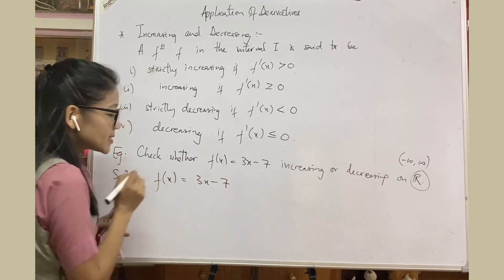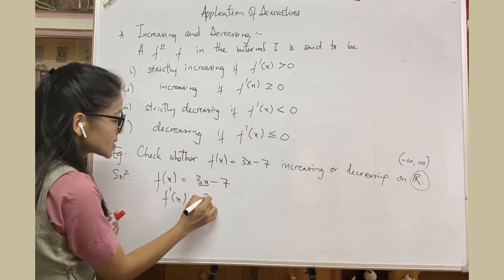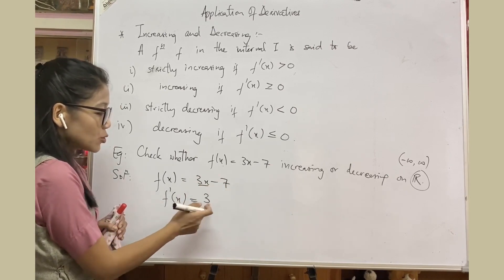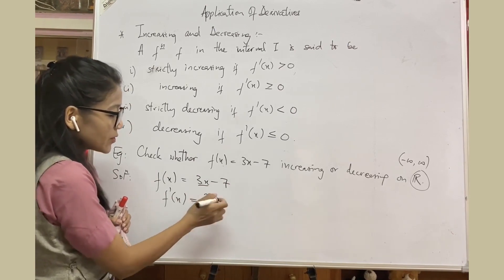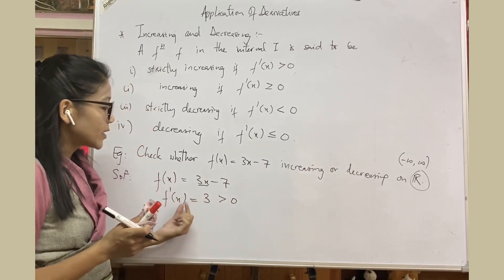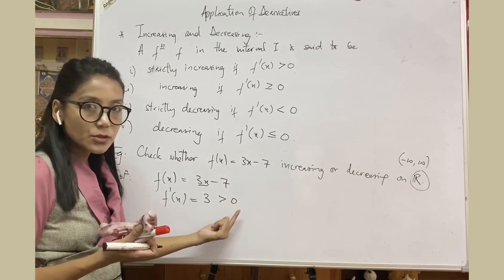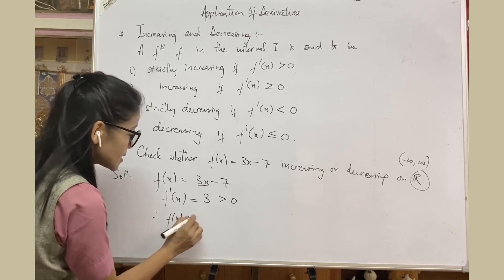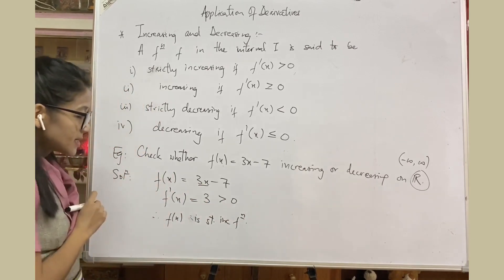You are given f(x) equals 3x minus 7. First you differentiate this. f'(x) — derivative of 3x is 3, derivative of 7 is 0, so you just get 3. f'(x) is equal to 3, which is always positive for all real numbers. Whatever x you take, it will always be 3, which is strictly greater than 0. Therefore, f(x) is a strictly increasing function.